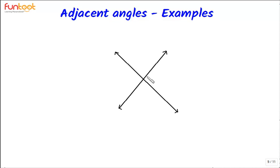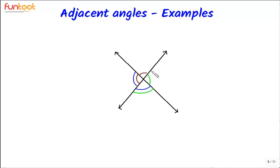Let's take two intersecting lines and see how many pairs of adjacent angles we can have. This angle is adjacent to this angle, this angle is adjacent to this angle, this angle is adjacent to this angle, and this angle is adjacent to this angle. So we can have a total of four pairs of adjacent angles here.